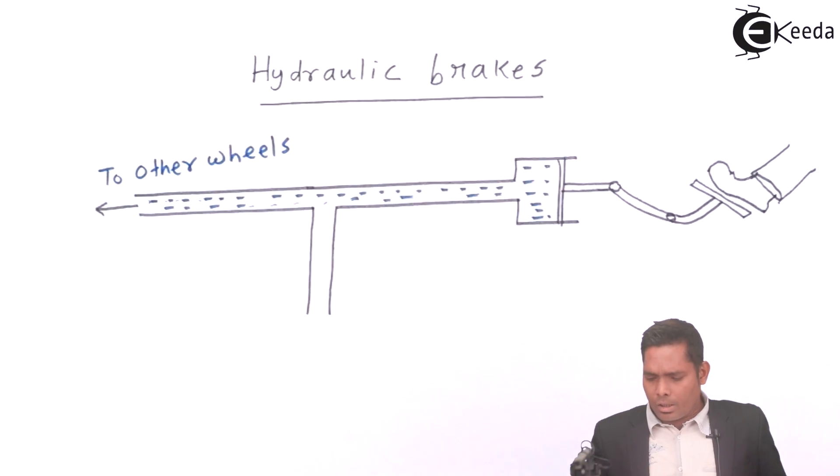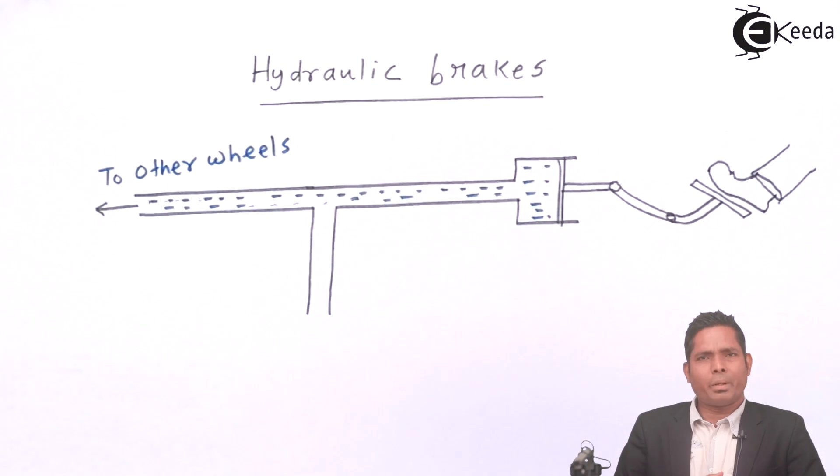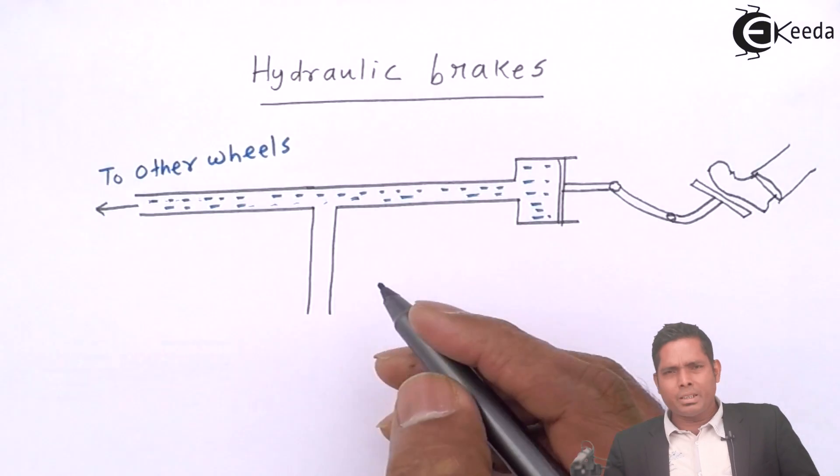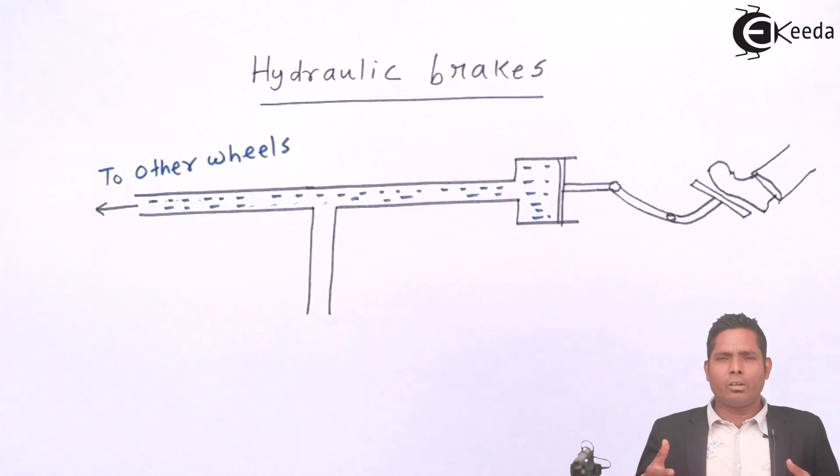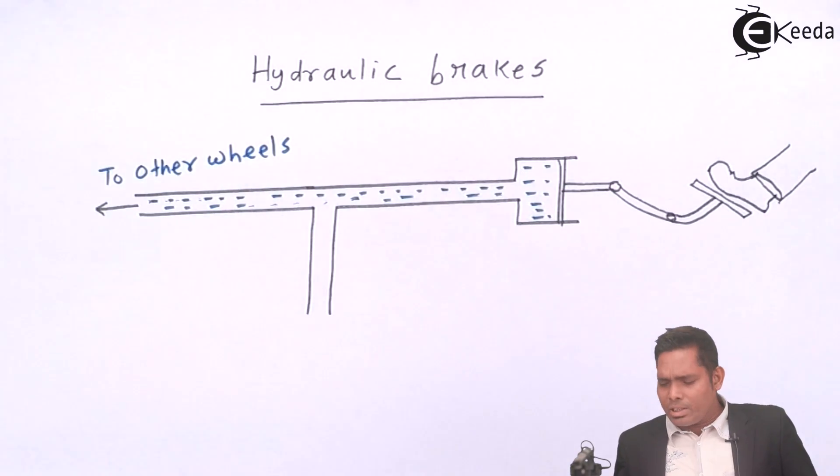So basically, hydraulic brakes are used to stop the vehicle, to slow down the rotating wheels by stopping it. The basic purpose is that if we in our cycle we press this then the brake works. In this case here we have oil used.